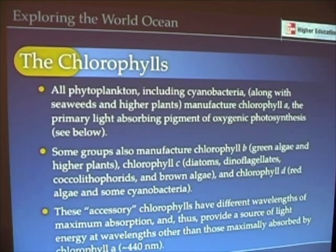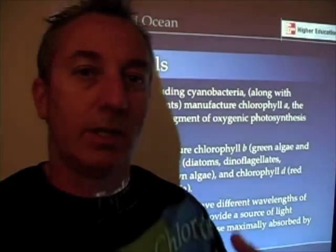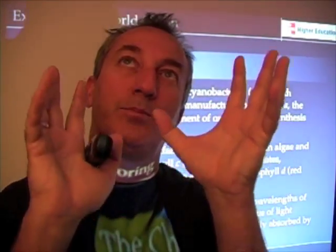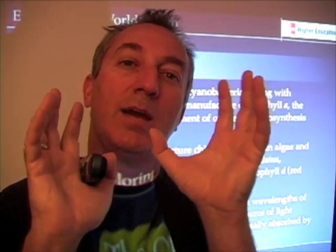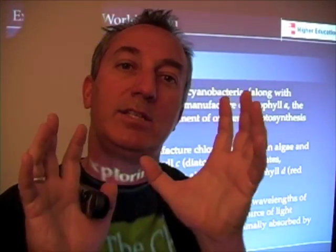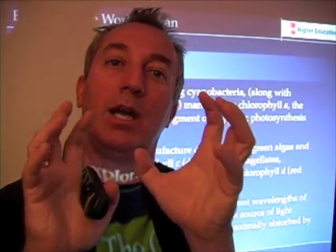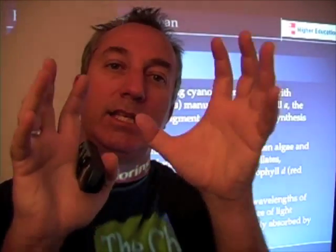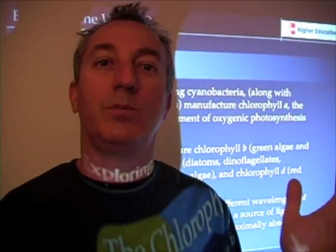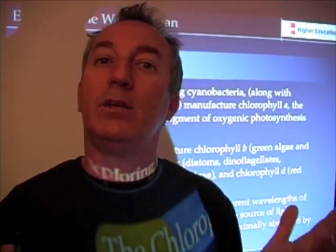Chlorophyll A is the primary light-absorbing pigment of photosynthetic organisms. This pigment is just a molecule that's able to capture light, and in particular it captures particular wavelengths of light. It's this molecule's ability to capture light and then take that energy and pass it on that really makes it the most amazing molecule on Earth.